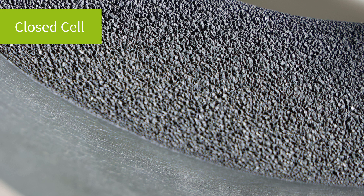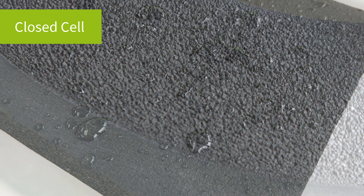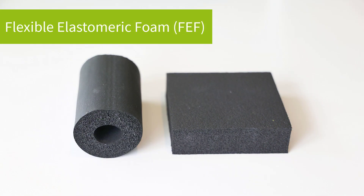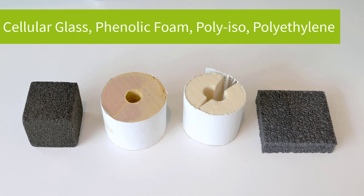If 90% of the cells or more are completely sealed off from each other with no gas exchange between them, the material is closed cell. This lack of gas exchange leads to low water absorption and low water vapor permeability. Flexible elastomeric foam, or FEF, falls into this family, while rigid versions include cellular glass, phenolic foam, polyisocyanurate, and polyethylene.